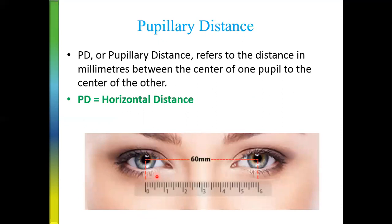Coming to the PD — PD is the horizontal distance. Most of you are aware that PD is nothing but the distance from the center of the nose to the center of the pupil. Ideally, we prefer monocular PD over binocular PD, as monocular PD gives more precise fitting for each eye. If you take binocular PD and divide by two, that is the wrong practice, because in the majority of cases the PD will not be exactly equal on both sides.